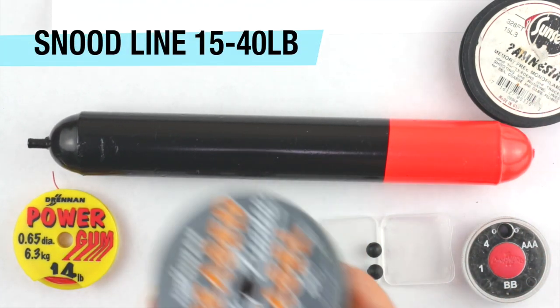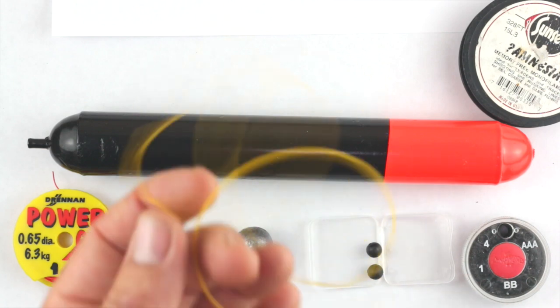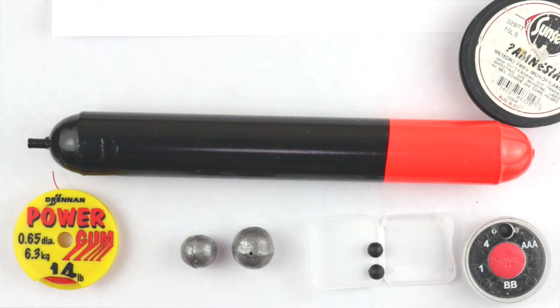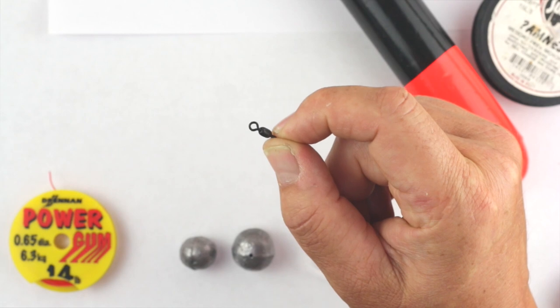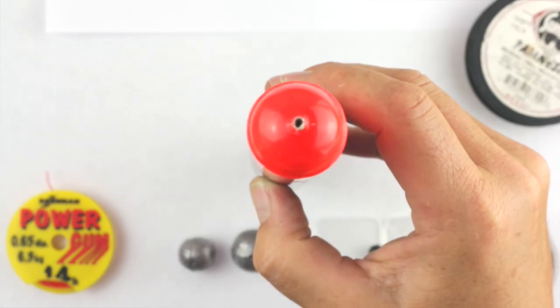Secure everything together, snood line, and we're actually going to be putting this float rig on the main line. You'll need a little swivel as well, this is a 100lb swivel, quite small.